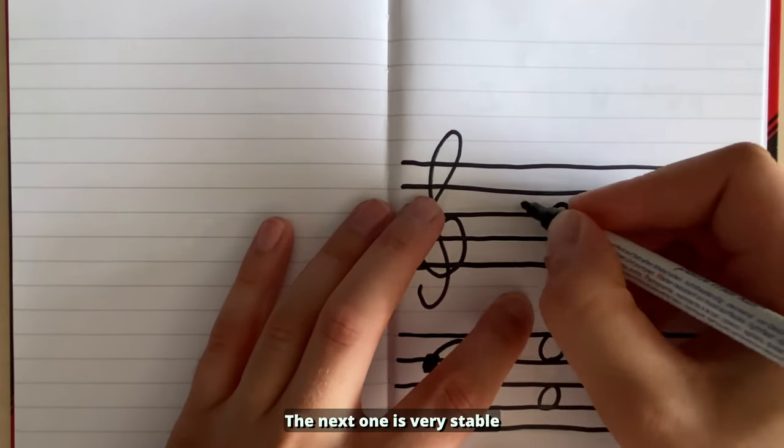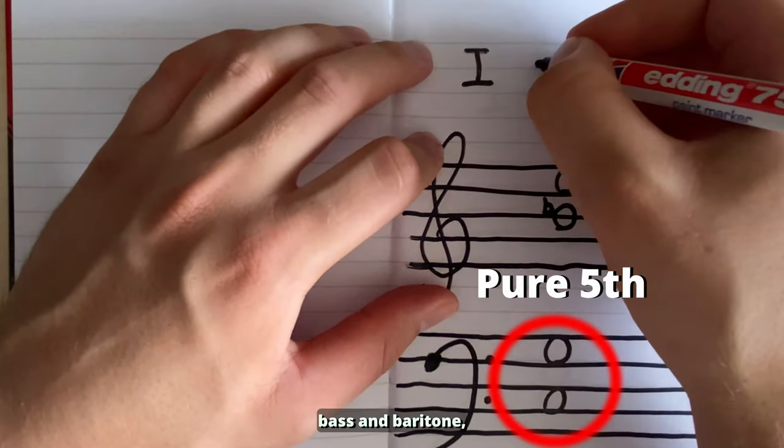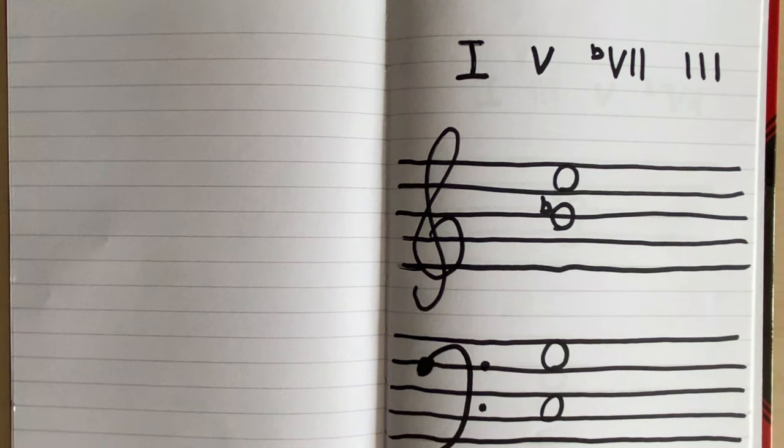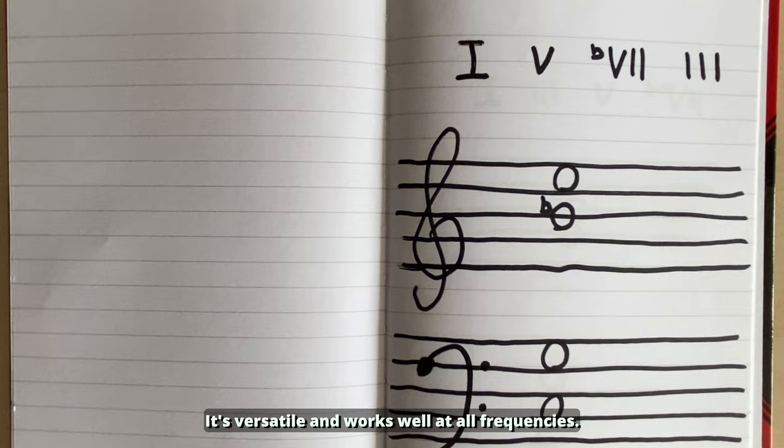The next one is very stable because we have a pure fifth between bass and baritone, stabilizing the rest of the chord structure. It's versatile and works well at all frequencies.